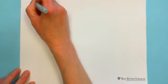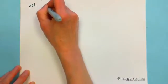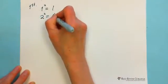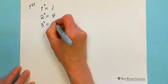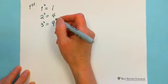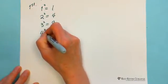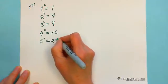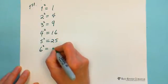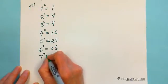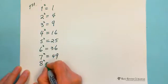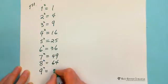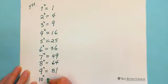First, let's talk about single digits. 1 squared equals 1, 2 squared equals 4, 3 squared equals 9 — because squaring means multiplying a number by itself twice. So 4 squared equals 16, 5 squared equals 25, 6 squared equals 36, 7 squared equals 49, 8 squared equals 64, 9 squared equals 81, 10 squared equals 100.